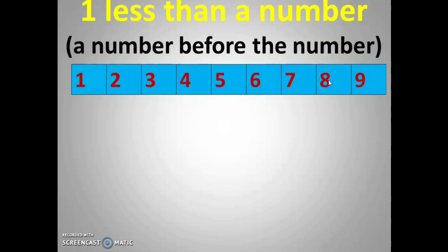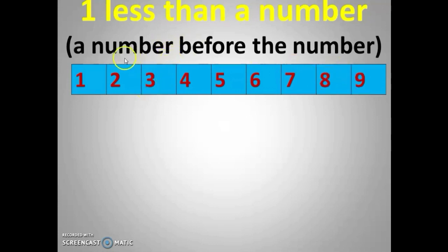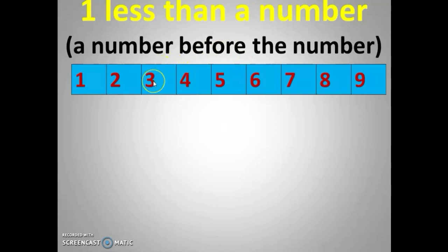Now I am going to ask from the middle. Before six? It is five. Before nine? It is eight. Before three? It is two. Before seven? It is six. Before four? It is three. The before number is on the left-hand side of the number strip.